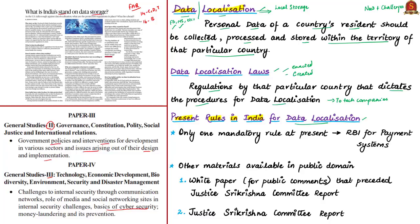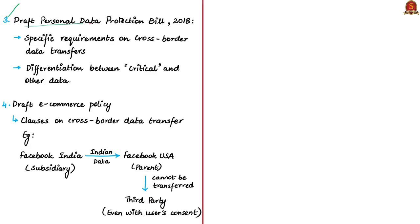Currently, the only mandatory rule on data localization in India is by the Reserve Bank of India, for payment systems. Other than this, there are only reports or drafts of bills yet to be signed into law. The other materials available in the public domain are: first, a white paper released by the government inviting public comments on data localization, released just before the Justice Shri Krishna Committee report. Second, the recommendations of the Justice Shri Krishna Committee report on data protection. Third, the draft personal data protection bill of 2018.